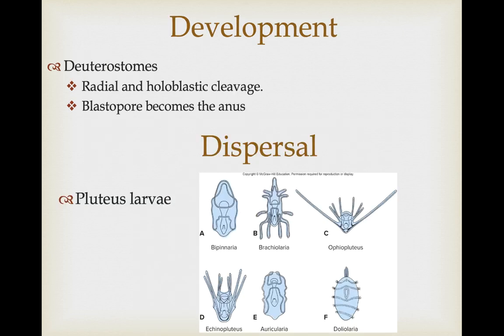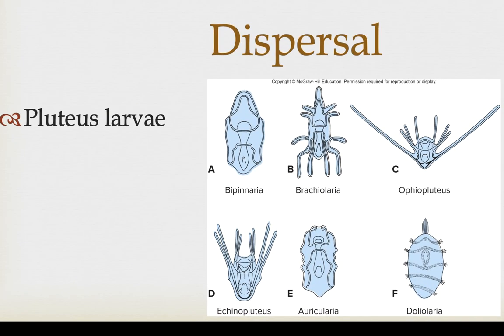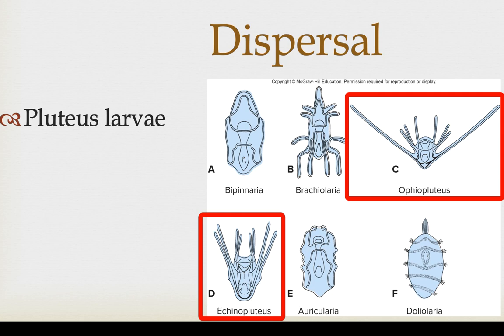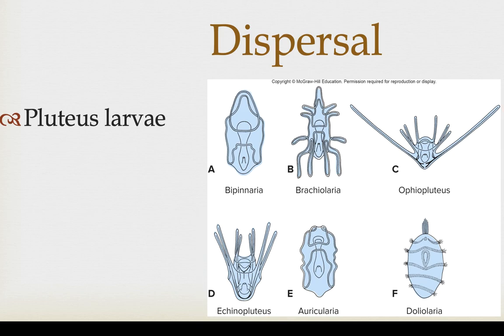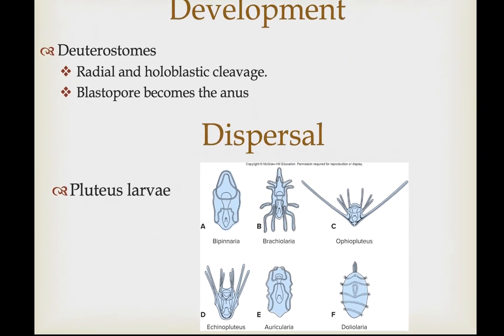As our first group of deuterostomes, they show radial holoblastic cleavage and the blastopore becomes the anus. They have several larval forms; the one to know is the pluteus larva — a V-shaped larval form, and you can clearly see that it is bilaterally symmetrical at this stage.